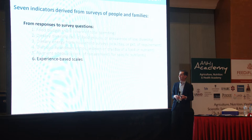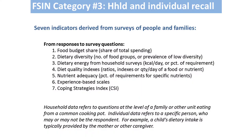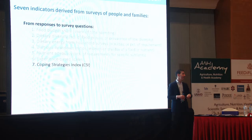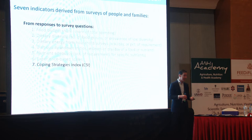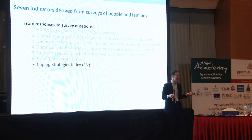Finally, coping strategies indexes ask what else about your life you disrupted in order to meet food needs — did you have to sell assets, sell your livestock? It's a measure of what else in your life was given up to meet food needs. These are all survey questions — an enumerator sits under a tree outside your house and asks these things. The whole point of the user's guide is that every one of these things is caused by many things and has many consequences, but we can describe what was measured and talk about that as a group.